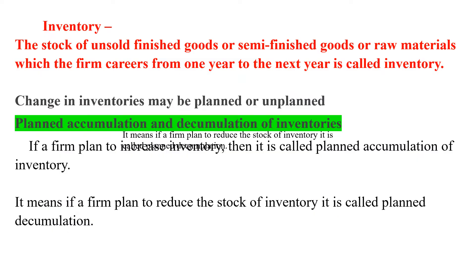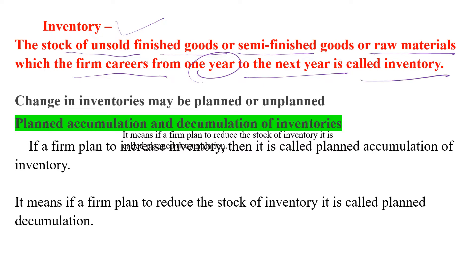What do we mean by inventory? The stock of unsold finished, semi-finished, and raw materials which a firm carries from one year to the next we call inventory. Inventory is a stock variable, and change in inventory is nothing but the difference between closing stock and opening stock. So change in inventory is a flow concept.